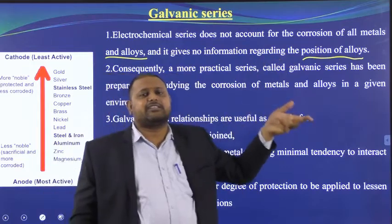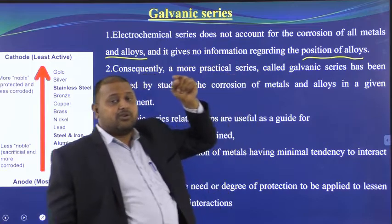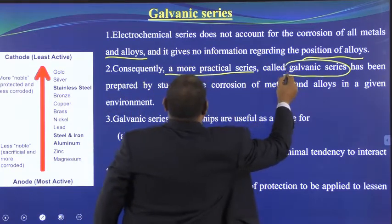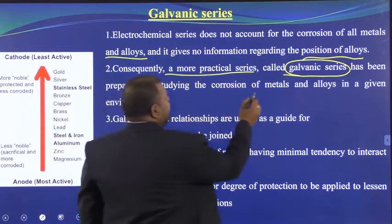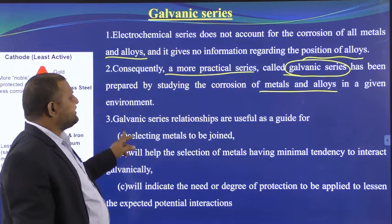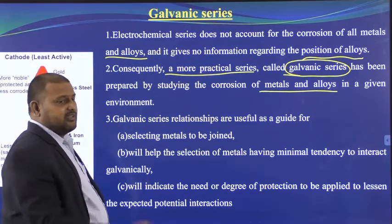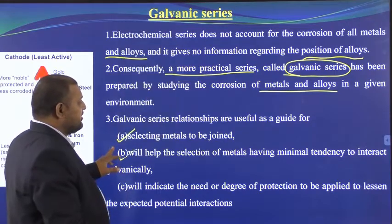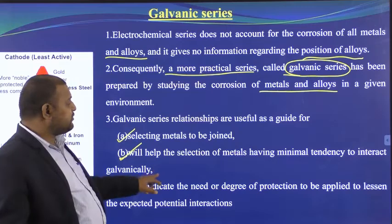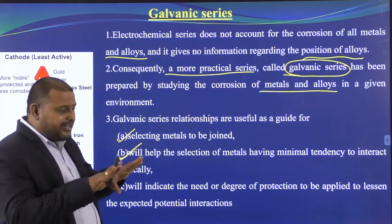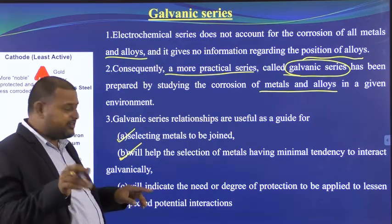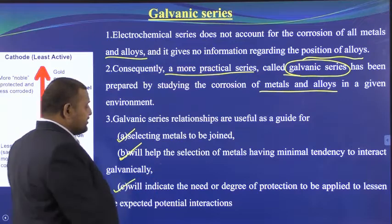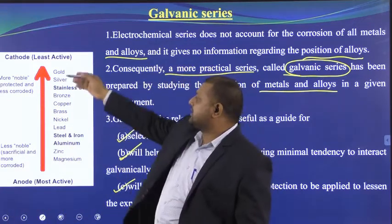Because the electrochemical series discusses metals and non-metals but not alloys, a more practical series called the galvanic series has been developed. The galvanic series gives information about metals and alloys. Using it, you can select which metals can be joined and which metals have minimal tendency to interact galvanically.